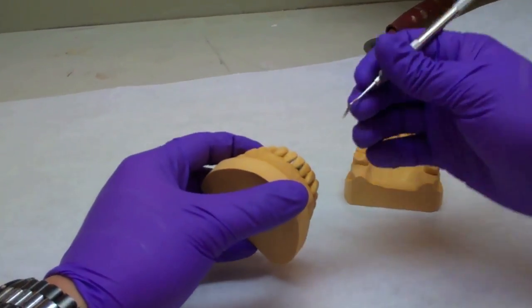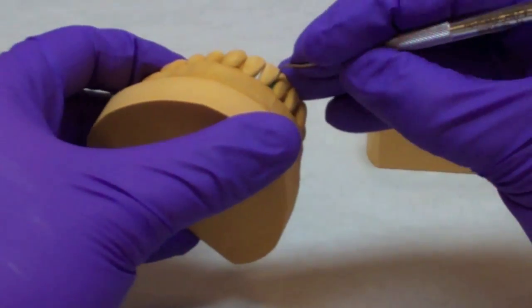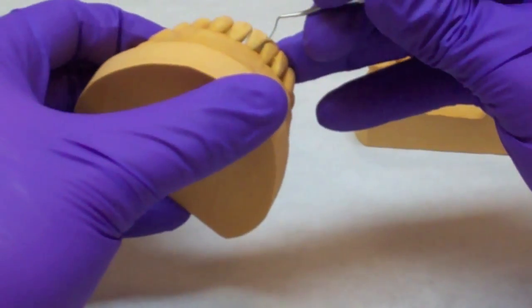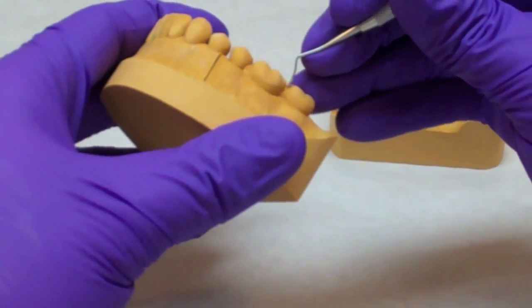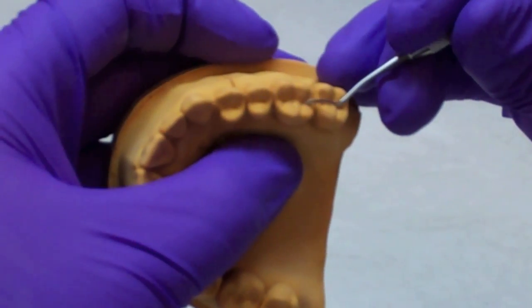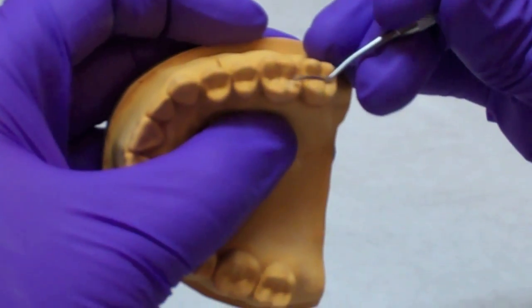You will need to check your models for any discrepancies, such as impression materials stuck interproximately between the teeth. Larger discrepancies that can't be removed with the tool should be left alone. Make sure to check occlusal tables for interferences, such as bubbles.